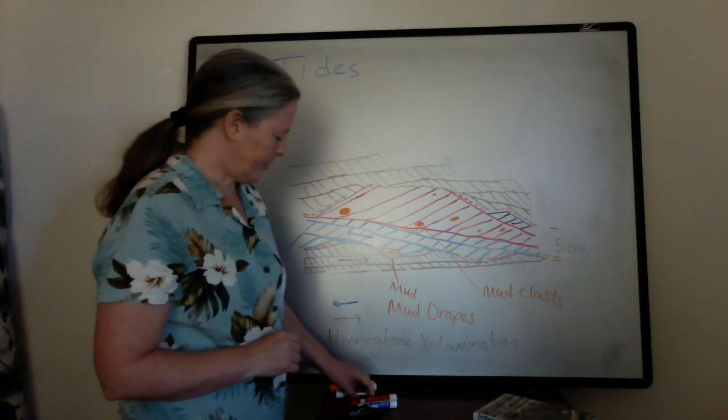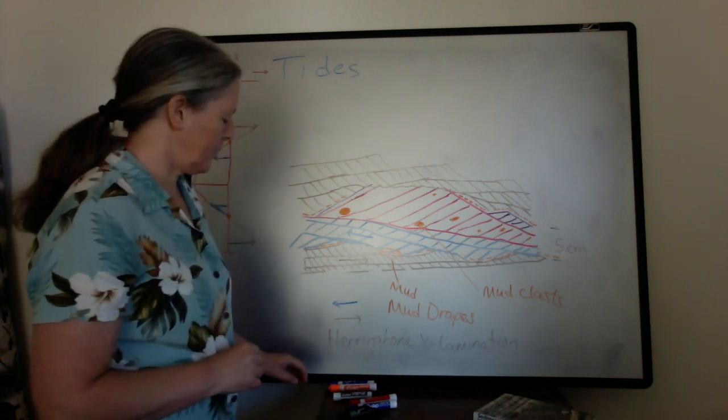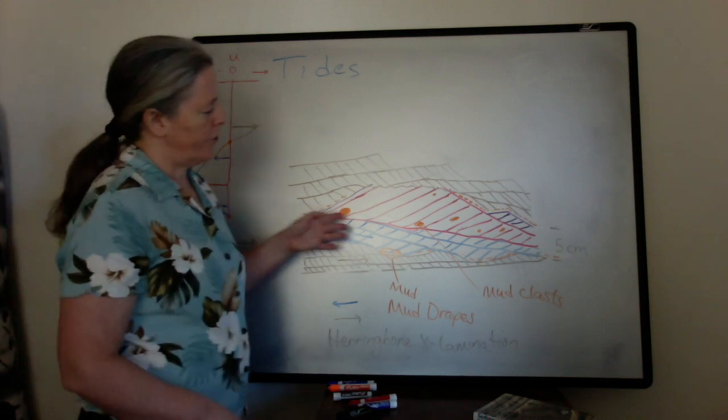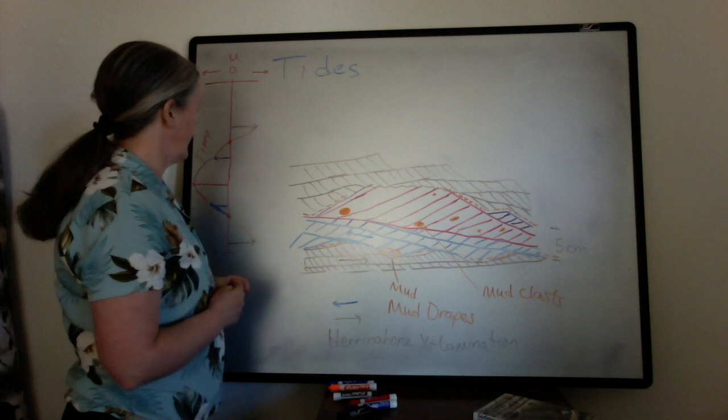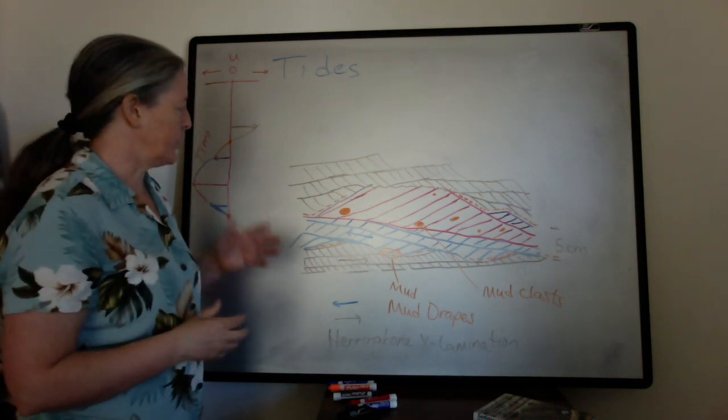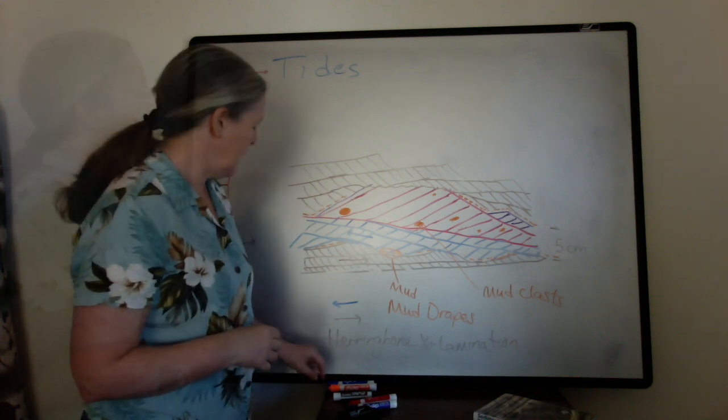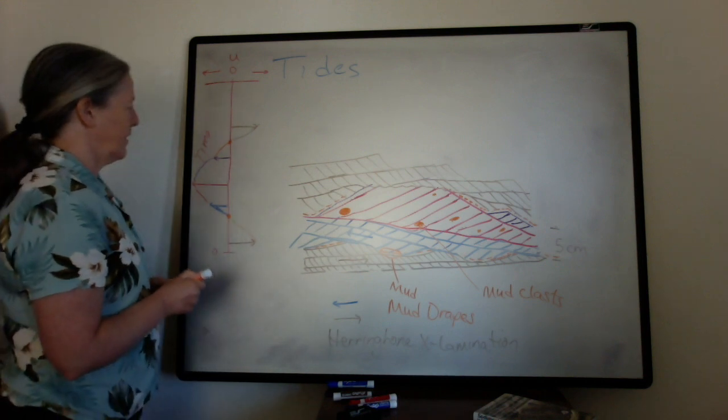There's one more feature I want to try to draw for you and that is what we call a reactivation surface. In this particular case I showed accumulation of sediment with the flows going in both directions. Sometimes the flow in one direction is much stronger than in the other direction. That means that the record of flow in one direction is much stronger than the other.